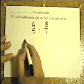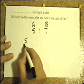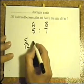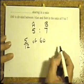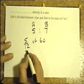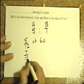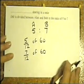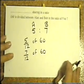In other words, Alan's going to get 5 twelfths of the £60. And Bob is going to get 7 parts out of the 12 of the £60. And this is one way of looking at ratios by sharing it using these fractions.